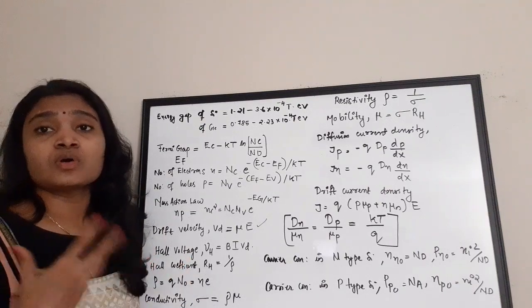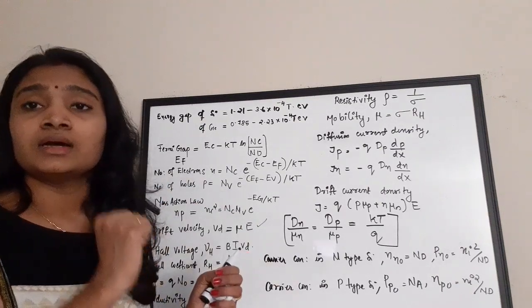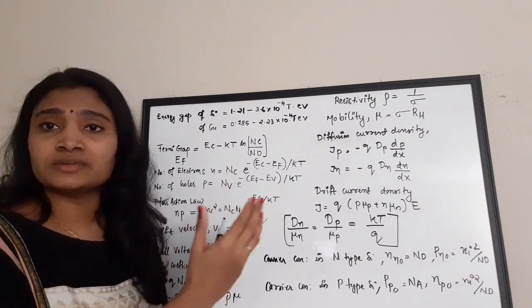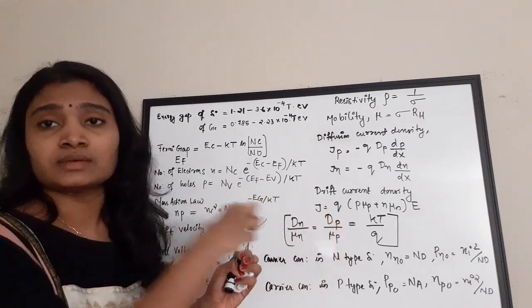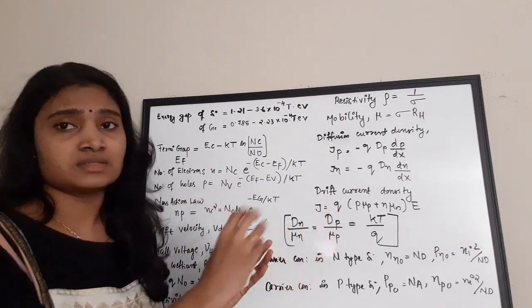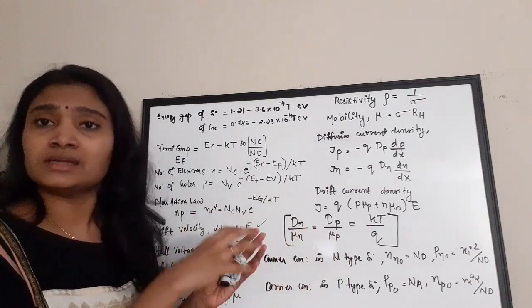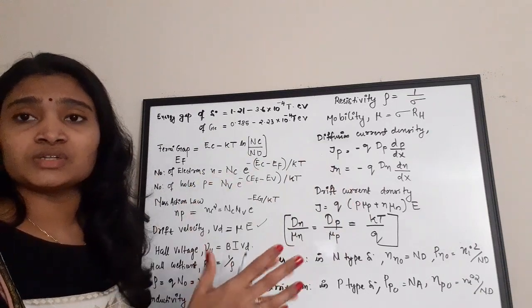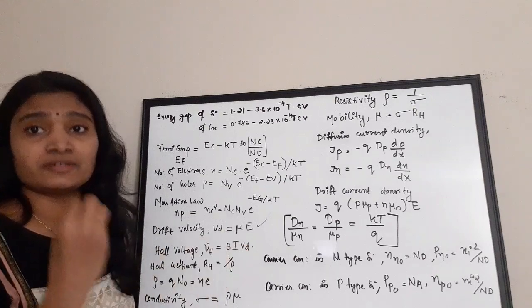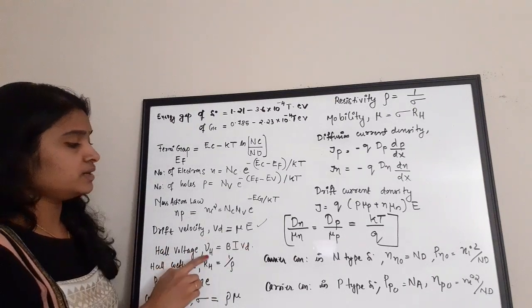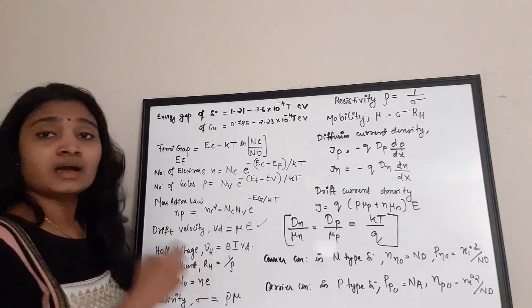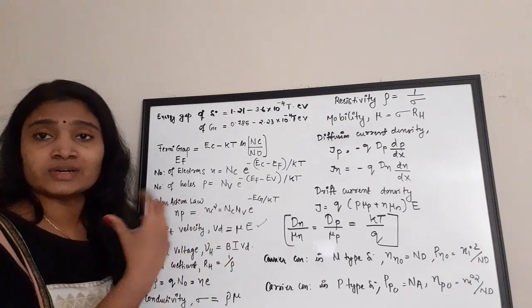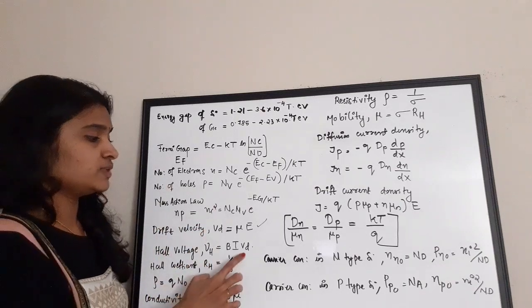The Hall effect: when a magnetic field is applied to a conductor, a potential difference is created due to the movement of charge from one side to the other — charges accumulate on one side and a vacancy forms on the other. This voltage is called the Hall voltage, given by: VH = B × I × vd, where B is the magnetic flux density, I is the current, and vd is the drift velocity.